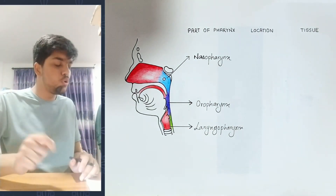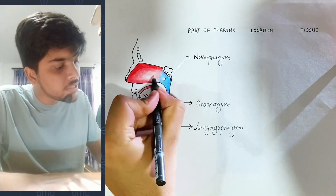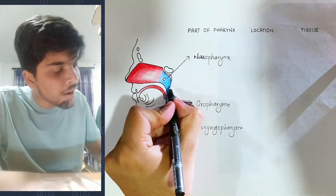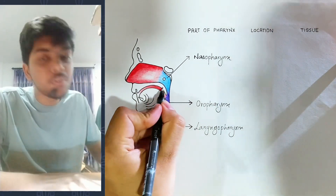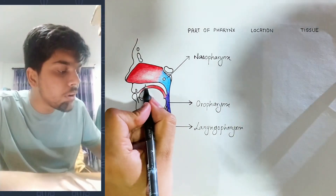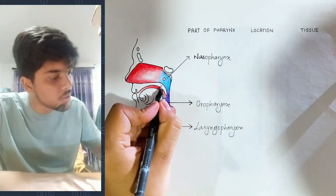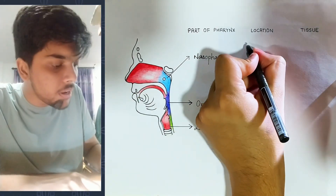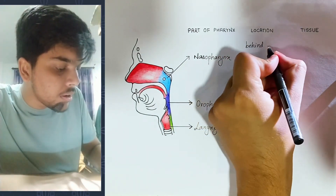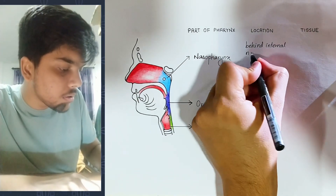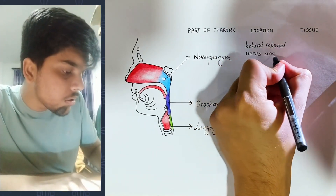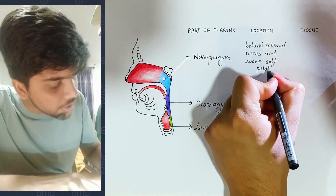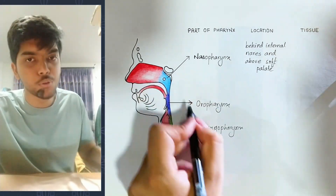Let's look at the details of the actual location. The nasal chamber has an internal layer. The internal layer has a part of the nasal pharynx. The soft palate is present — that is the soft palate. Behind the internal nare and above the soft palate, the nasopharynx is present.